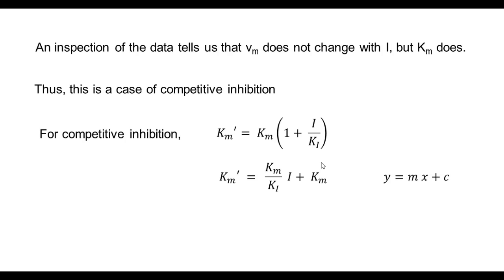To do that, I am looking at this in a y equals mx plus c form. Km dash is y, I is x, and the slope in that case is Km by Ki, and the intercept is Km. We have data of Vmax and Km with varying I's. So I is the independent x coordinate, Km dash, the modified Km, is the y coordinate.